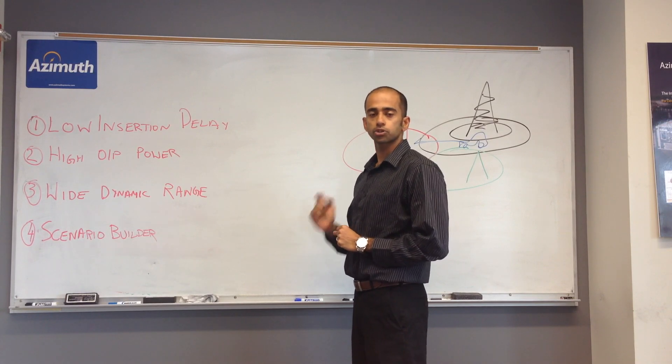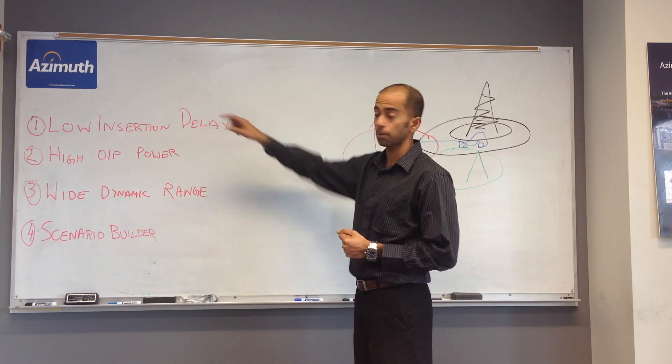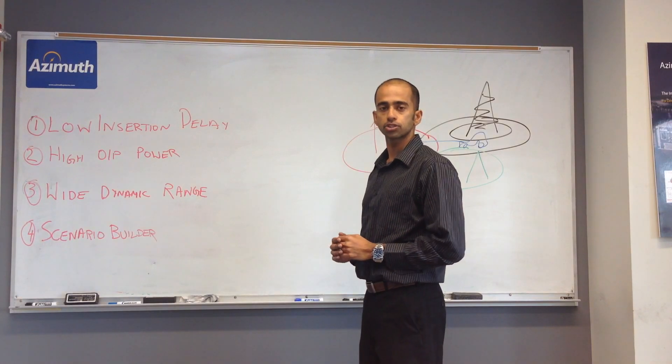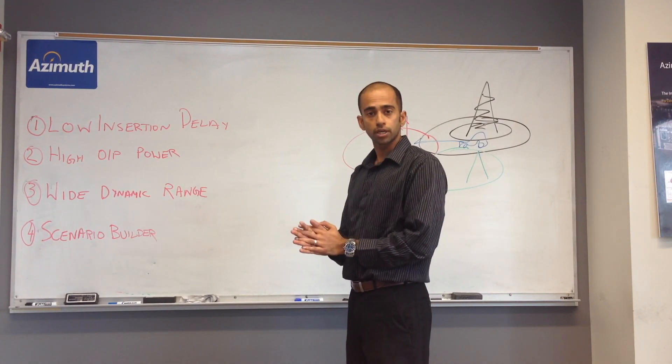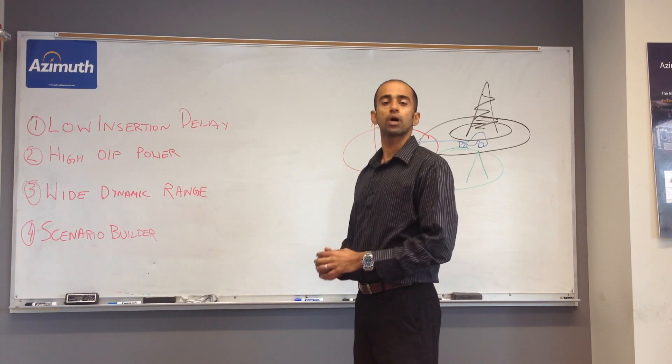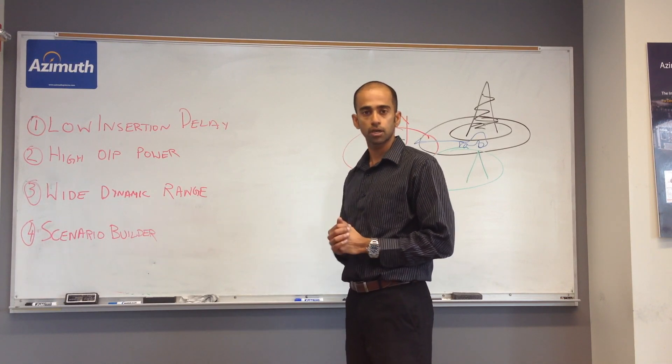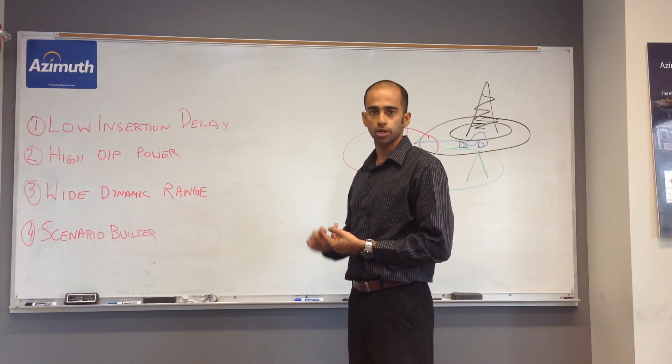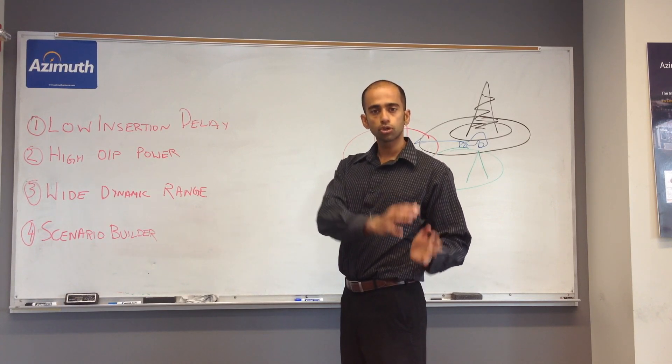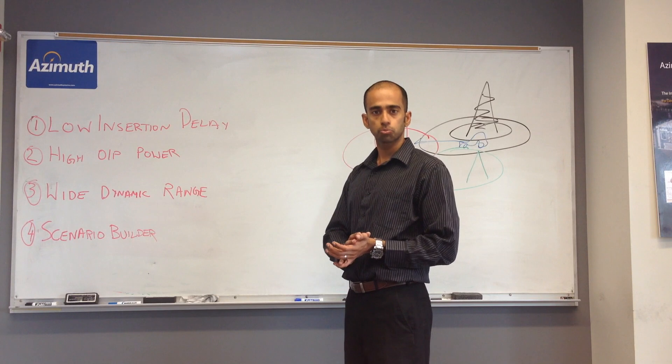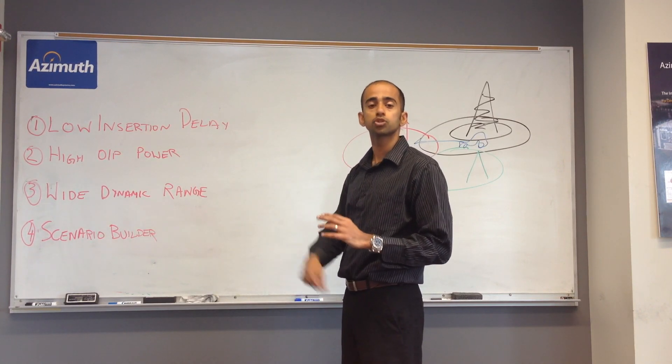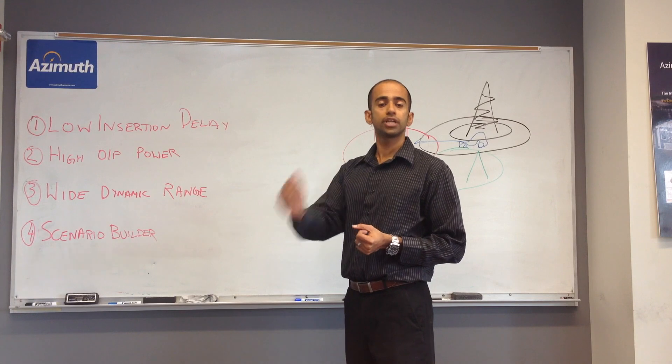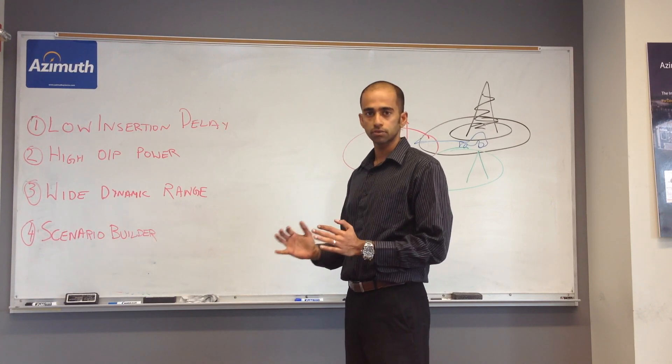To summarize, what's important for small cell testing from a channel emulation standpoint? The first thing to keep in mind is the low insertion delay. Remember from our math that just going from a 1 microsecond solution to a 4 microsecond solution, you're introducing an artificial delay equivalent to 900 meters. The second thing is high output power. The solution you have in mind should be capable of handling the high output power scenarios that may come about with small cells. The third thing to keep in mind is the wide dynamic range as you emulate different mobility scenarios. As you emulate different scenarios related to how the user goes from an indoor to an outdoor environment or macro cell to a small cell environment, the solution should be capable of handling the large swings in power that go with it. Last but not the least, the solution should make it easy for you not only to create these scenarios but also to test these scenarios out comprehensively. Thank you.